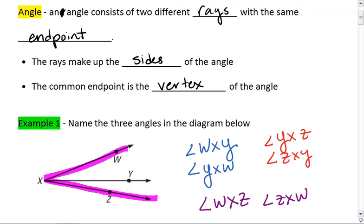And so those are your three angles that we have on this picture. Notice the vertex is always the center letter, and all of these three angles have the same vertex of X.